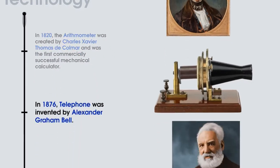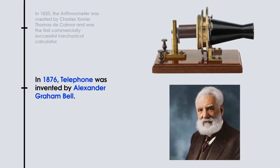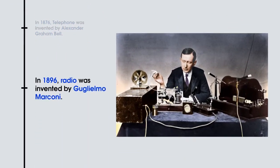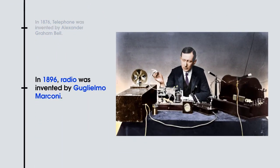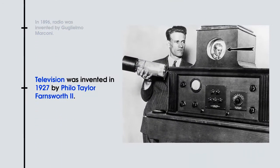In 1876, the telephone was invented by Alexander Graham Bell. And in 1896, radio was invented by Guglielmo Marconi. Also, television was invented in 1927 by Philo Taylor Farnsworth II.